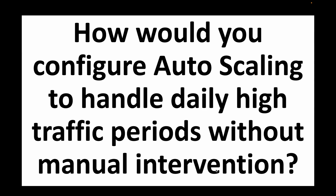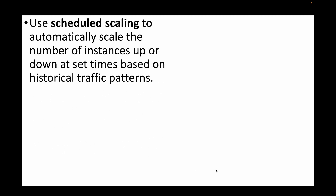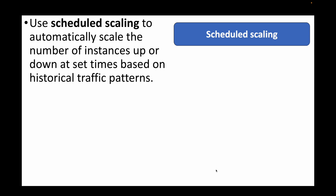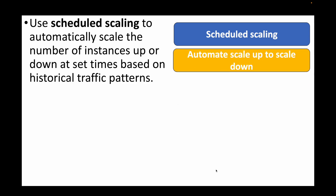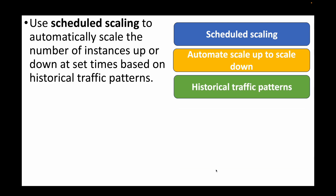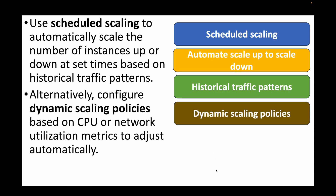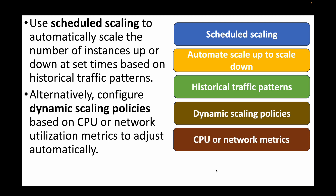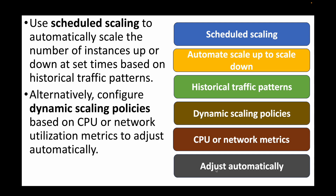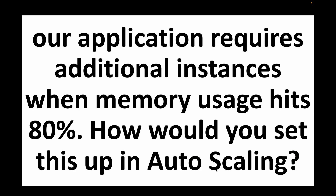The next question: how do you configure auto scaling groups to handle daily high-traffic periods without manual intervention? For this we can use scheduled scaling, which scales instances based on timings you set or historical traffic patterns. Alternatively, you can configure dynamic scaling policies based on CPU utilization or network utilization to scale EC2 instances automatically. So you can either schedule scale-up a few hours in advance or scale up on demand when load increases.